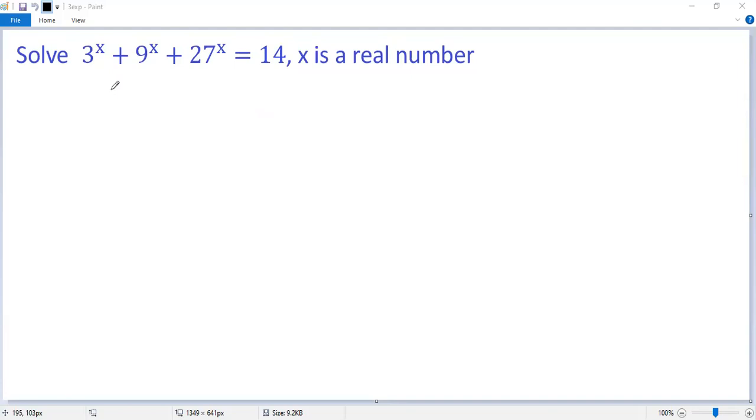To solve the exponential equation, let's manipulate the left side. 3 to the power of x plus 9 is equal to 3 squared to the power of x. 27 is equal to 3 cubed to the power of x equals 14.